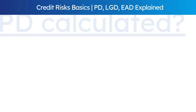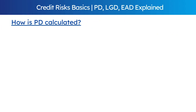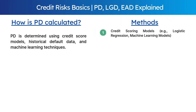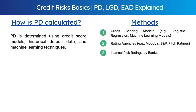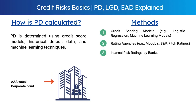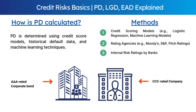Let's discuss how PD is calculated. PD is determined using credit score models, historical default data, and machine learning techniques. Common methods include credit scoring models such as logistic regression and other ML models, rating agencies such as Moody's, S&P, and Fitch, and internal risk ratings by banks. For example, a AAA-rated corporate bond will have a very low PD, while a company with a junk rating — triple C or below — will have a high PD.